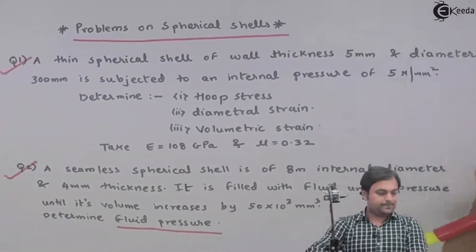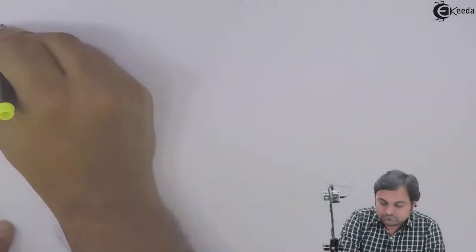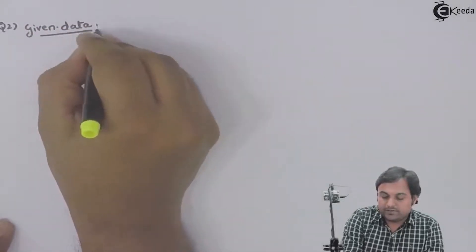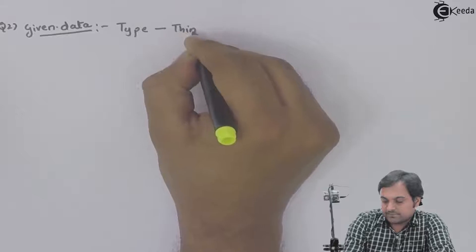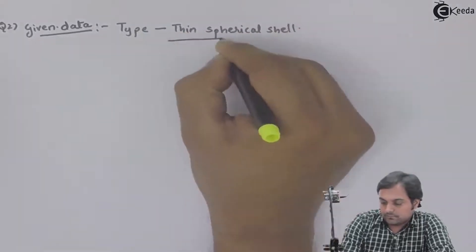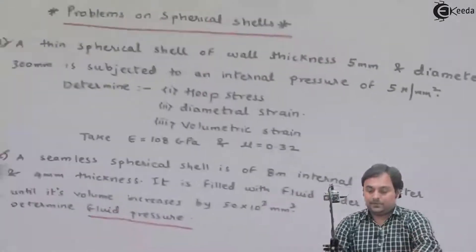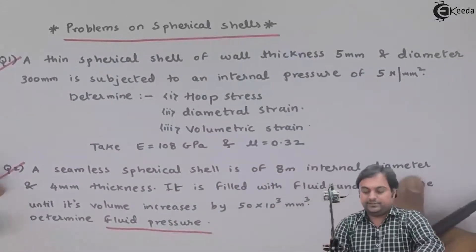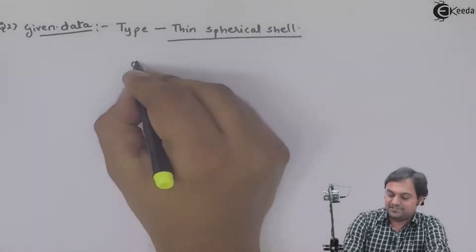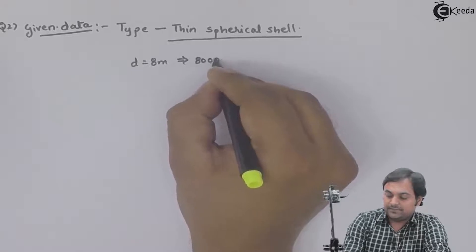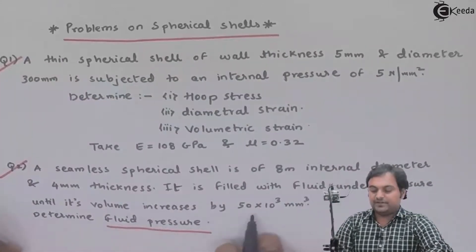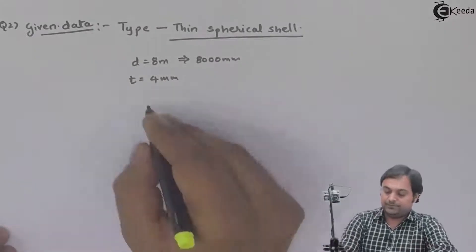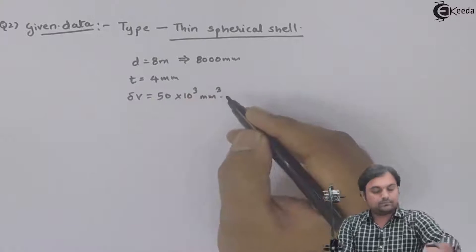Writing the given data: the type here is thin spherical shells. A seamless spherical shell is of 8 meter internal diameter and 4 mm thickness. Comparing the diameter to the thickness — diameter is 8 meters, that is 8,000 mm, and thickness is just 4 mm. So it is a thin spherical shell. It is filled with fluid under pressure and its volume increases by 50×10³ mm³, which is the change in volume.